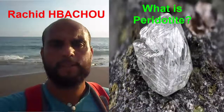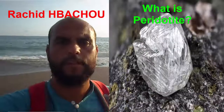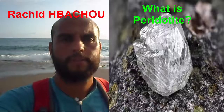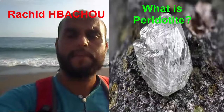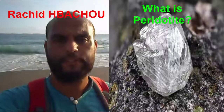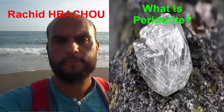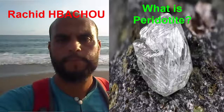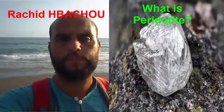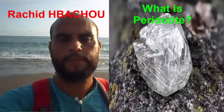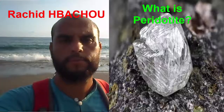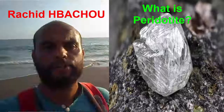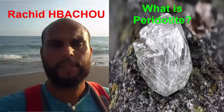Peridotite is a generic name used for coarse, green, dark colored, and dramatic igneous rocks. Peridotites usually contain olivine as they are primarily mafic minerals, frequently with other mafic minerals such as pyroxene and amphiboles. Their silica content is low compared to other igneous rocks and they contain very little quartz and feldspar.